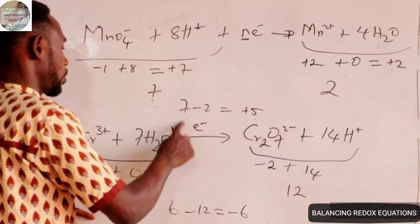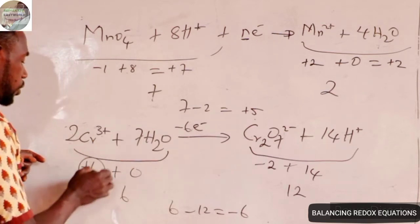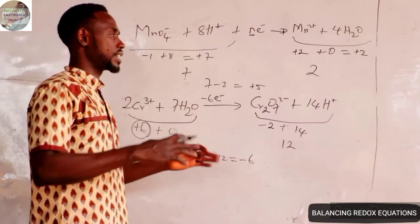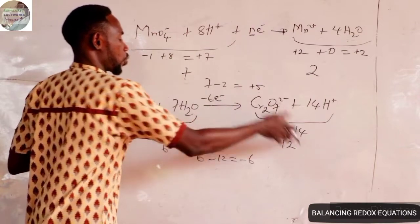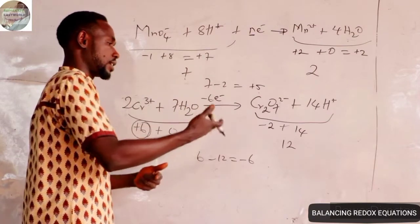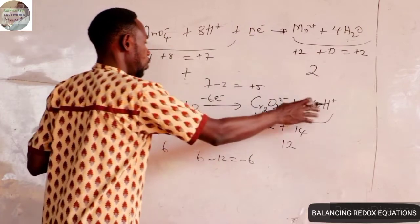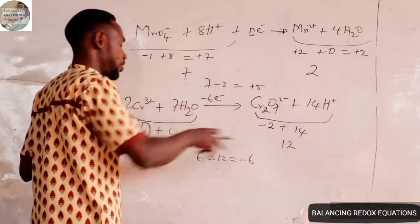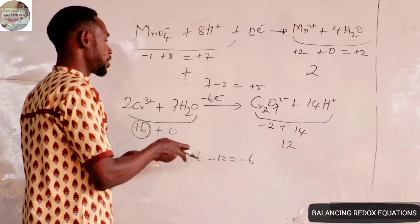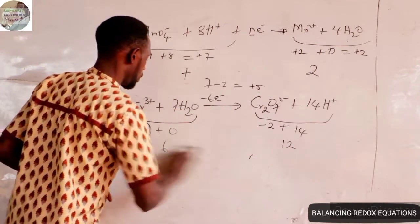This means that for the total charge of +6 to become a net charge of +12 on the product side, it has to lose 6 electrons. This is what I mean by negative counting: in normal mathematics, for 6 to become 12 you add 6, but in redox equations you subtract — reactant charge minus product charge gives you the electron count. So 6 − 12 = −6 confirms 6 electrons are lost.